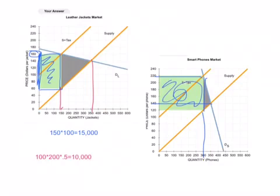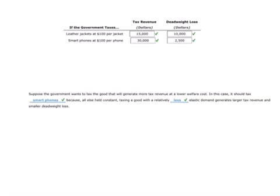Now the deadweight loss is going to be quite a bit smaller. This times it's 100, but our decrease in quantity was only 350 to 300, so it's only 50. So 100 times 50 times 0.5 for our smartphone market there. So our smartphone deadweight loss was only $2,500, tax revenues were $30,000. So which would you put the tax on? You would place the tax probably in the smartphone market, because you raised more taxes at a lower deadweight loss. And the reason that happens is because the demand for smartphones is much less elastic than the demand for leather jackets.